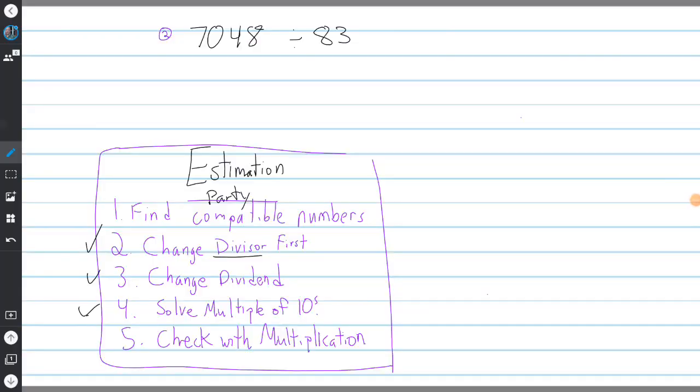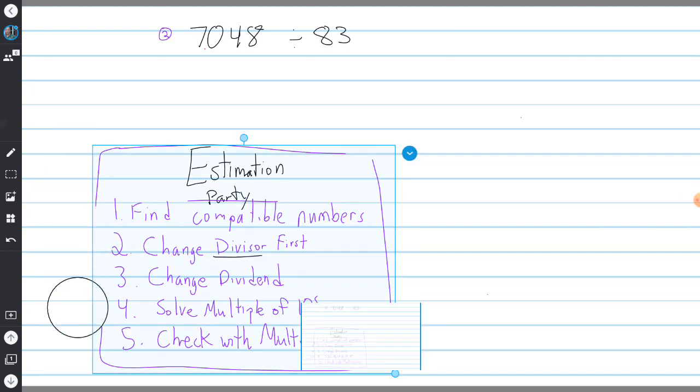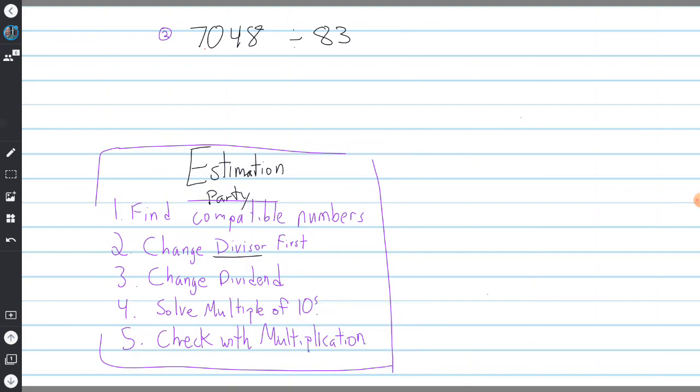All right, we have a new problem: 7,048 divided by 83. What do we do first? I have to find compatible numbers. Change the divisor first—which one's the divisor? The little guy. So I'm going to make 83 into 80.